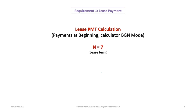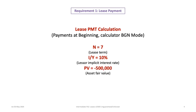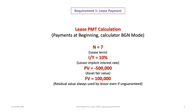The lease term is 7 years, so N equals 7. The lessor's implicit rate is 10%, so IY equals 10. The present value, PV, of the asset fair value is $500,000 — enter this as a negative value using the plus/minus button. The future value, FV, is $100,000, representing the residual value, which the lessor always uses to calculate the lease payment — even when the residual is unguaranteed. Once all variables are entered, compute PMT and you should get $83,784.